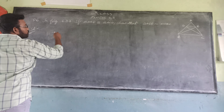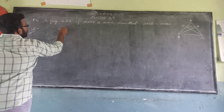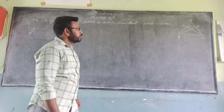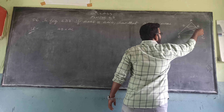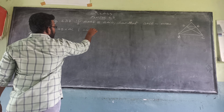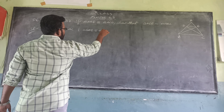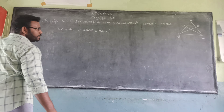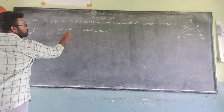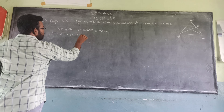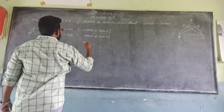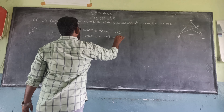First of all, AB is equal to AC. Because triangle ABE is congruent to triangle ACD. Similarly, AB is equal to AE. Also, triangle ABE is congruent to triangle ACD — let this be condition 1 and condition 2.